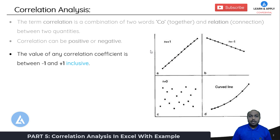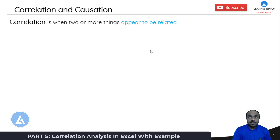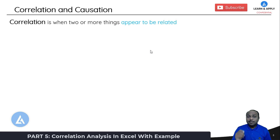Now let's talk about the common mistake that people make while conducting this correlation analysis. The correlation analysis should not be confused with causation. I am going to explain in detail with the help of a practical example what is the difference between correlation and causation. Please make a note of it because it's very important and I have seen people make this common mistake while conducting correlation analysis.